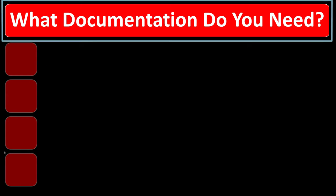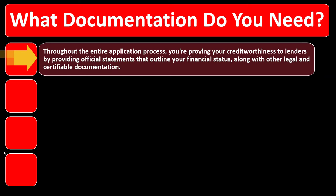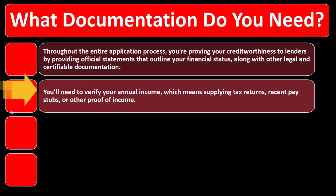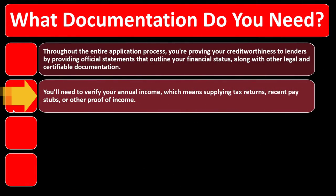What documentation do you need? Throughout the entire application process, you're providing your creditworthiness to lenders by providing official statements that outline your financial status, along with other legal and certified documentation. You'll need to verify your annual income, which means supplying tax returns, recent pay stubs, or other proof of income. The loan officer is trying to determine, based on their heuristics — generalized percentages based on gross income — how much loan you might be able to qualify for.